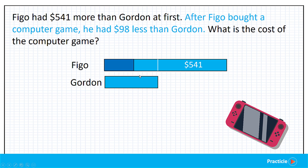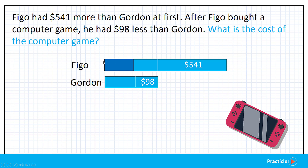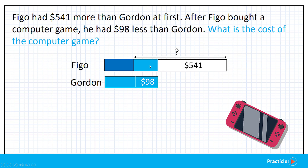Now, are we missing any information from the model? We know that Figo had $98 less than Gordon in the end, so the difference here must be $98. Now let's look at the question again — what are we supposed to solve? The cost of the computer game. By looking at our model and comparing the amount Figo had in the beginning and what he had in the end, we can find the part that shows the cost of the computer game. If Figo spent $541, he would have the same amount left as Gordon. Since he has $98 less than Gordon in the end, the amount Figo spent must be $541 plus another $98 more.